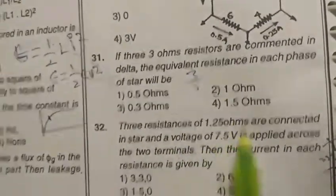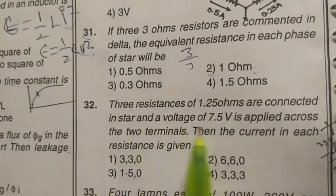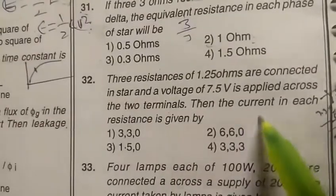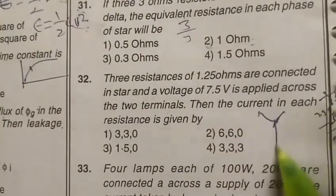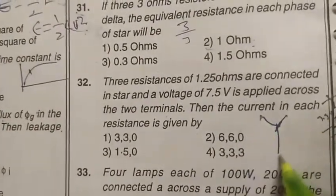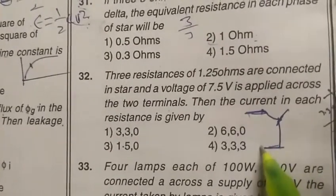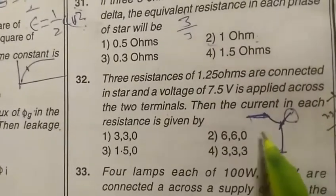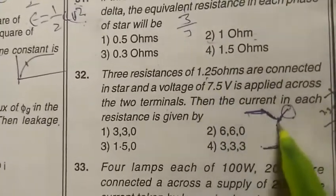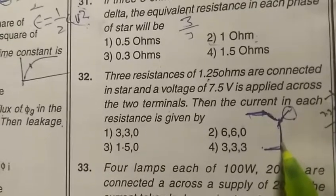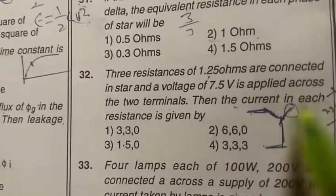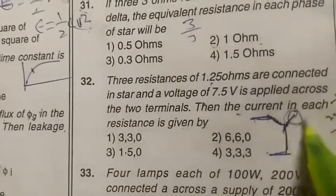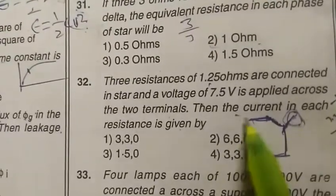Three resistors of 1.25 ohms are connected in star configuration, and a voltage of 7.5V is applied across two terminals. Two terminals are connected together and the remaining terminal is open - no current flows. The resistance is 1.25, also 1.25, also 1.25. The current in each resistance is given by each resistance value.